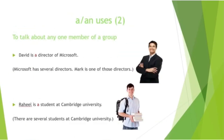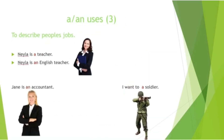Another use of 'a' and 'an' is to talk about any one member of a large group. 'David is a director of Microsoft' — this means that Microsoft the company has several directors and David is one of those directors. He is one member of a large group.